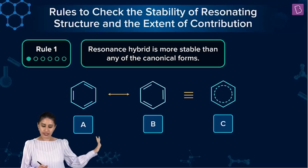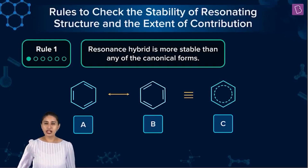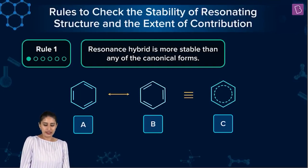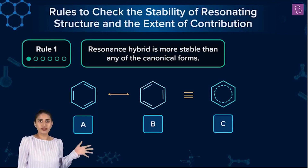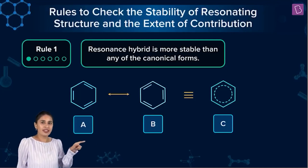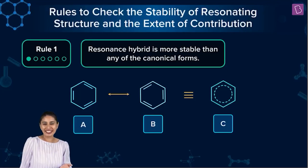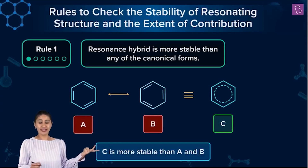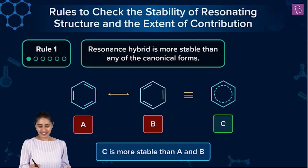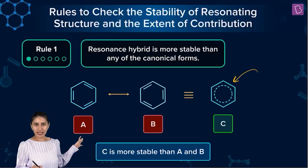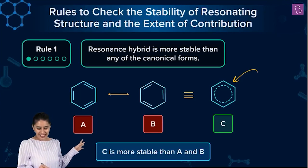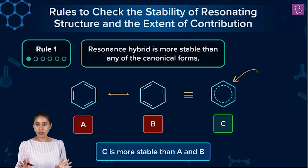If I ask you — out of A, B, or C, which is going to be more stable — keeping in mind rule number one, that the resonance hybrid is more stable than any of the canonical forms, the right answer is that the hybrid is going to be most stable. So C is the hybrid — we know from the dashes. C is more stable than A and B. Rule number one is simple, sorted, easy peasy.